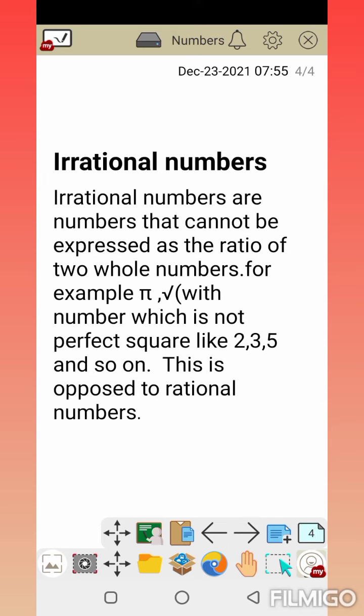And last but not least, irrational numbers. Irrational numbers are numbers that cannot be expressed as the ratio of two whole numbers, numbers which are not perfect squares. For example, π (pi), √(square root) of numbers like √2, √3, √5, √10.